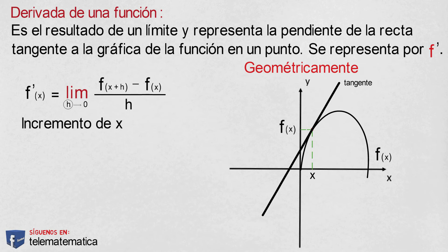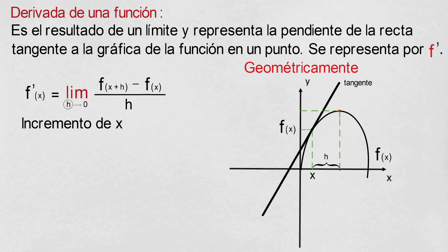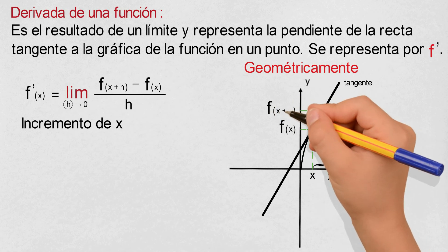Then, according to Newton, if we add an increment to the x-coordinate of the point, which is called the increase of x and is denoted by the letter h, we obtain the coordinates of another point, whose x-coordinate is x plus h and whose image is f(x+h).